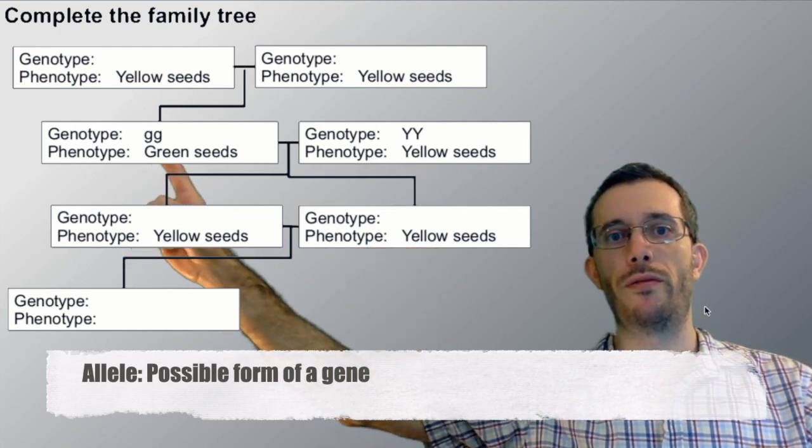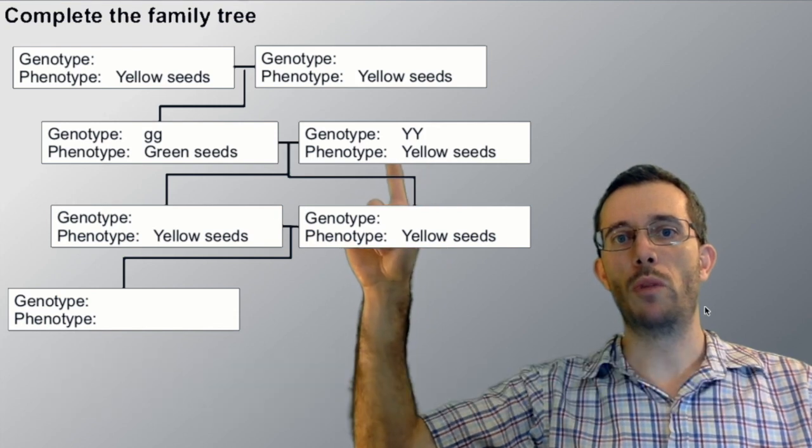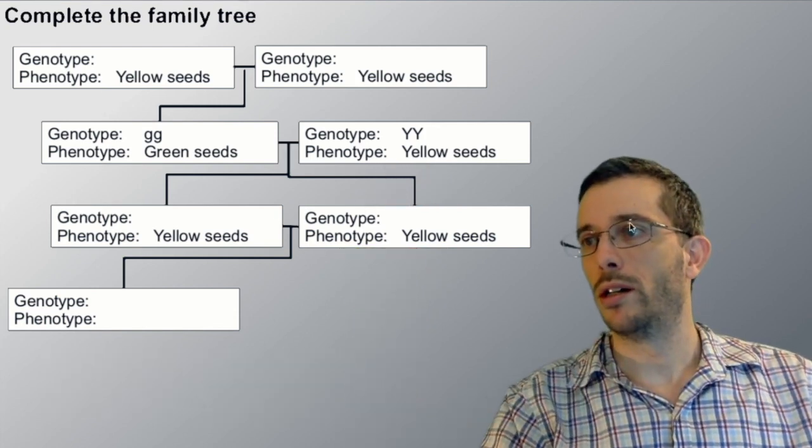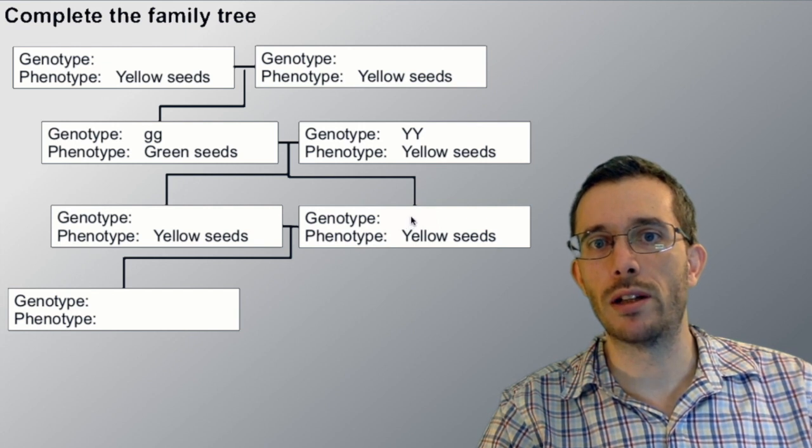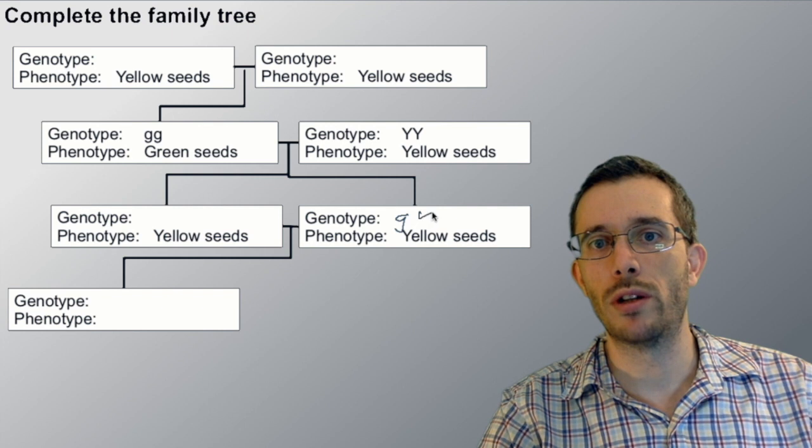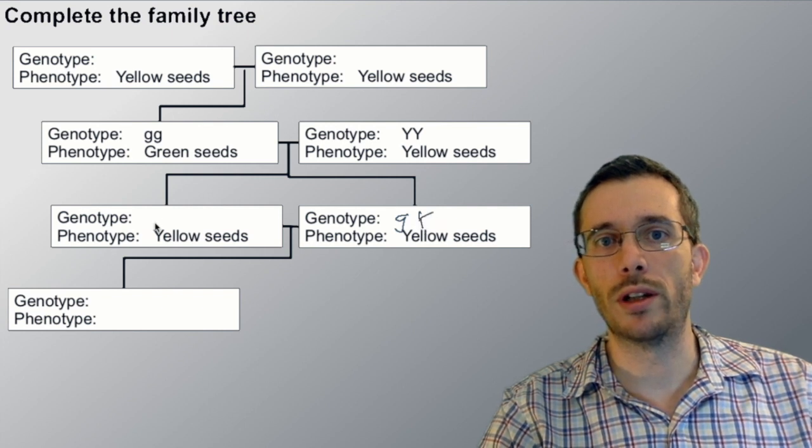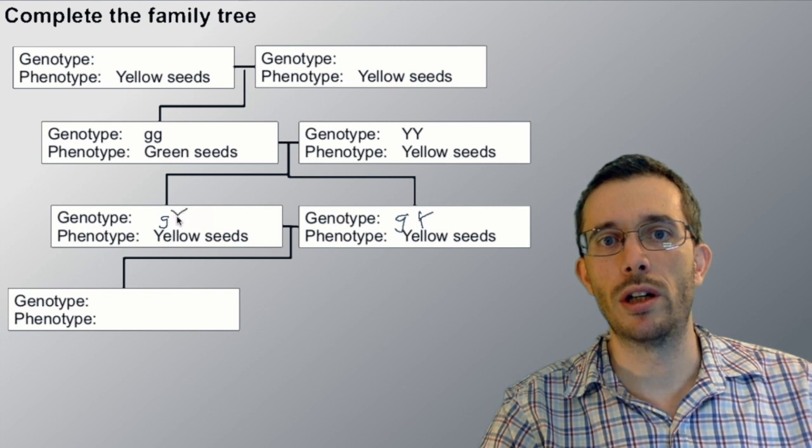So one is from, let's say, the father and one's from the mother. So we have a genotype here that's definitely a green one from one of the parents and the yellow one from the other one, and here the same. There's no other possible combination that can happen.